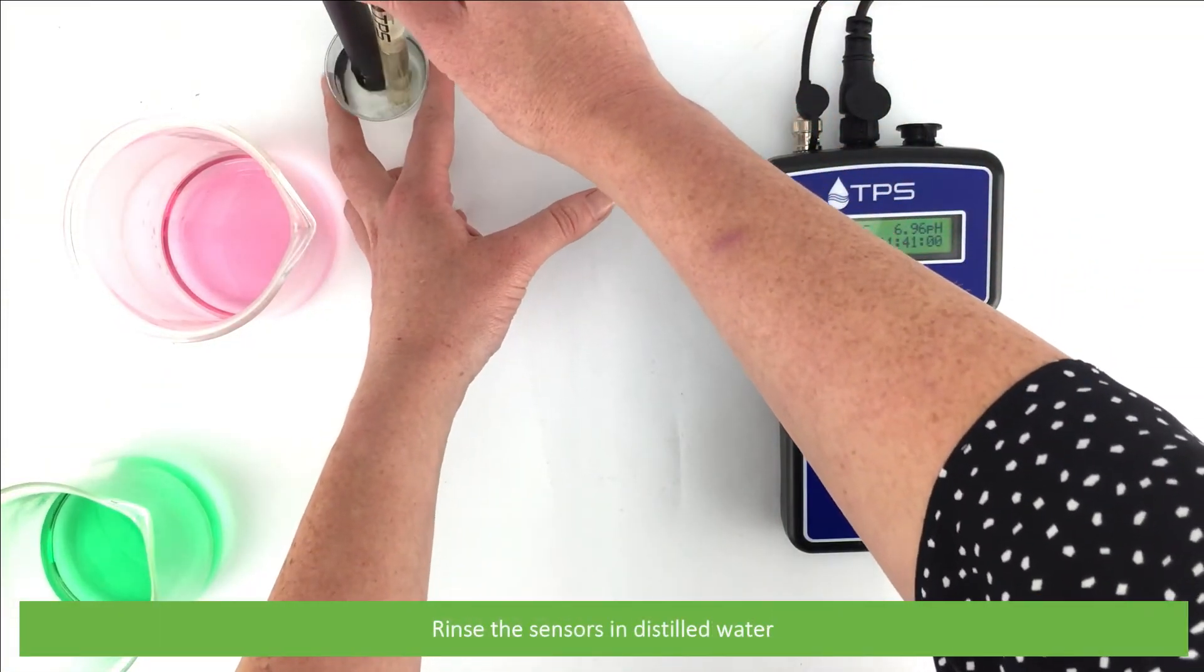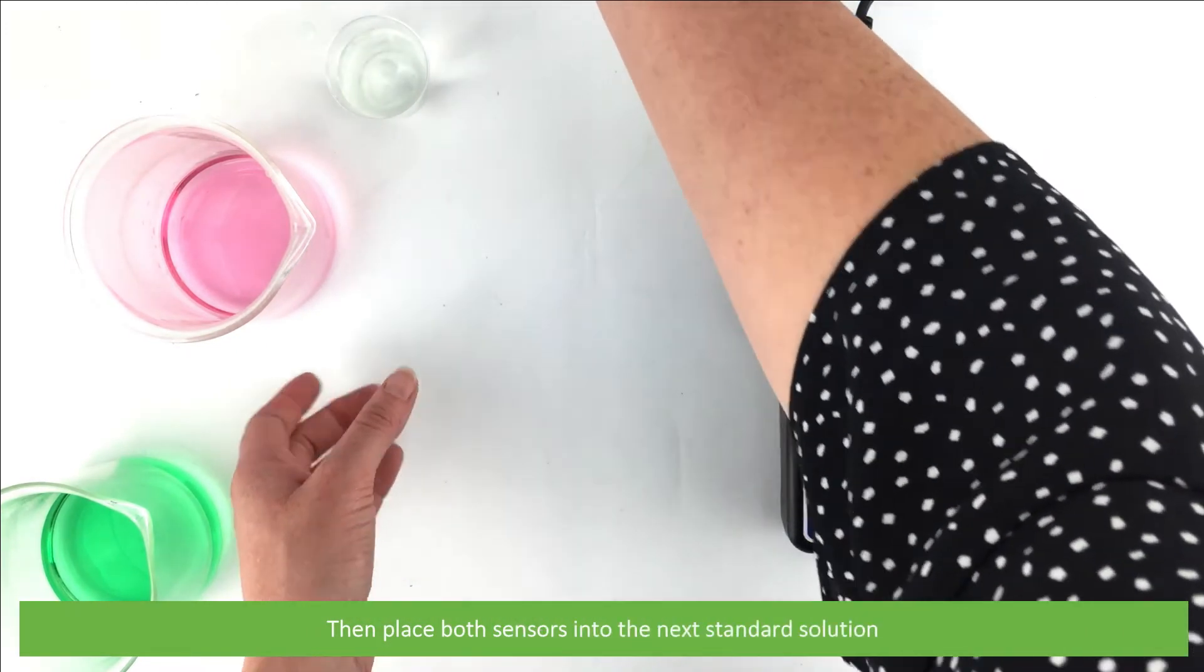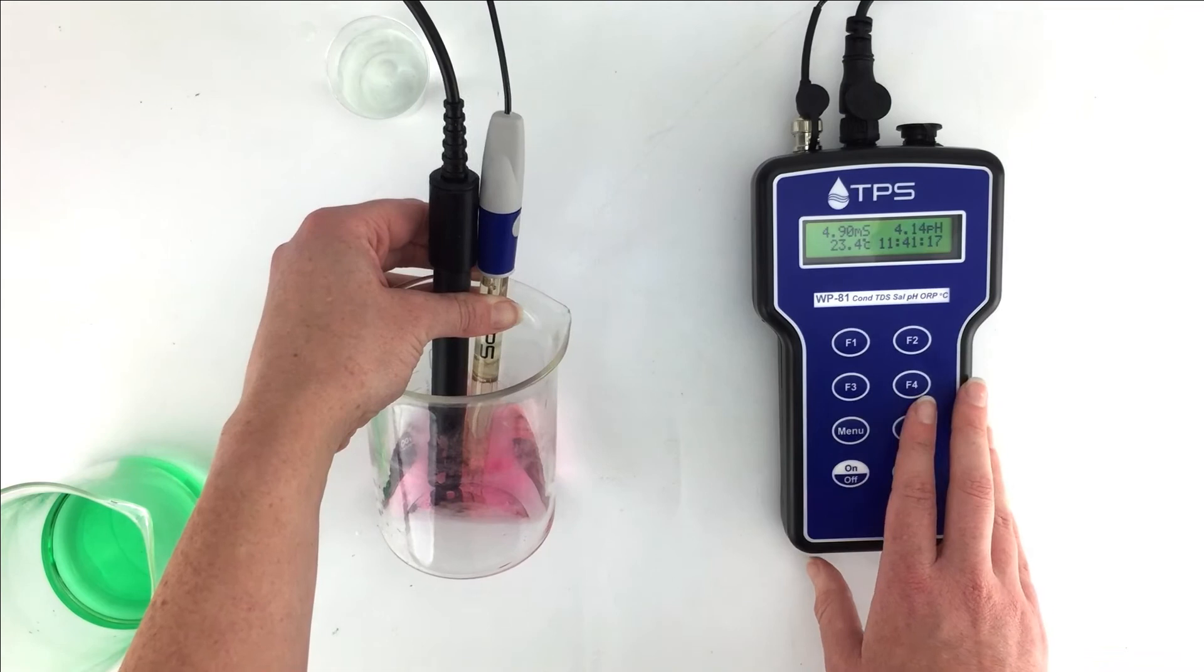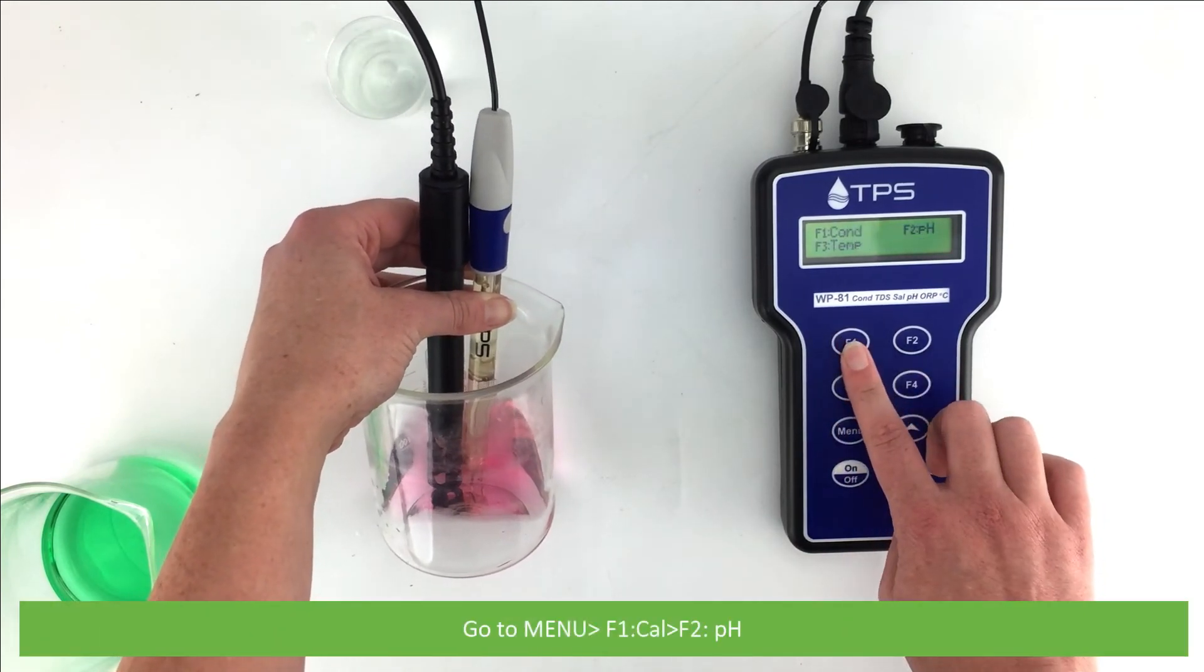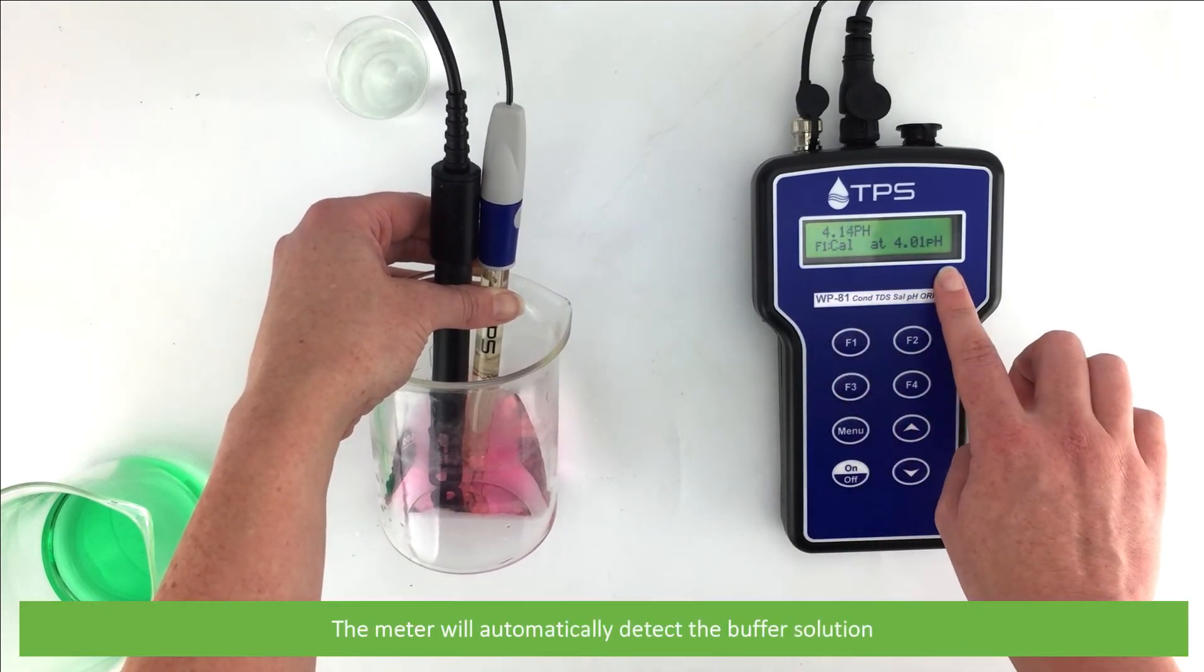Rinse the sensors in distilled water, then place both sensors into the next standard solution. Go to menu, F1 cal, F2 pH. The meter will automatically detect the buffer solution.